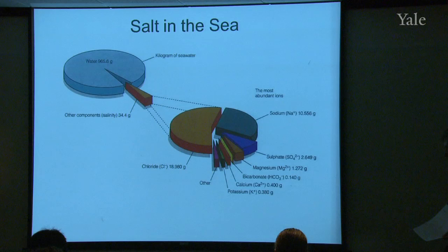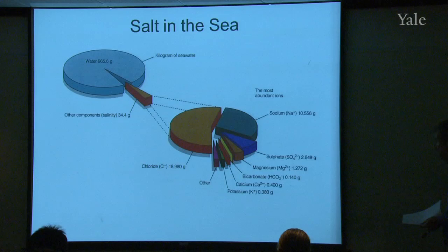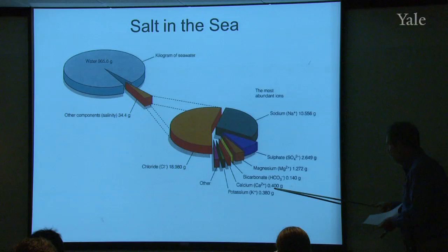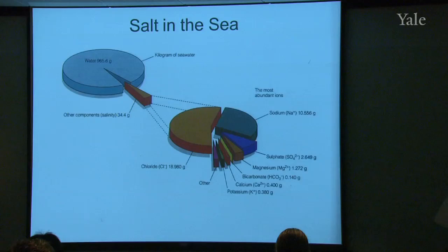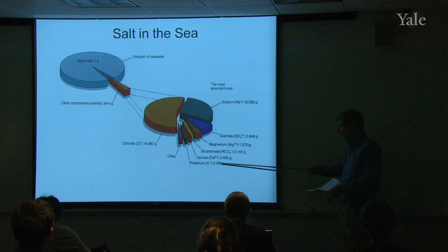So you might want to compare these numbers that I have here in lecture, the 10.56 grams per kilogram of seawater, the 1.27 for the magnesium, 0.4 for calcium, and 0.38 for potassium with the values you have. But just remember, when we got to Long Island Sound, we only had a salinity of about half that of ocean water. So you should divide these numbers approximately in half, or double your numbers, before you do the comparisons.